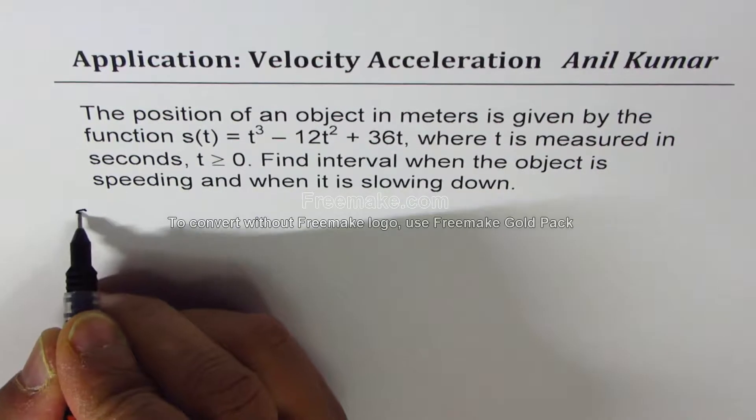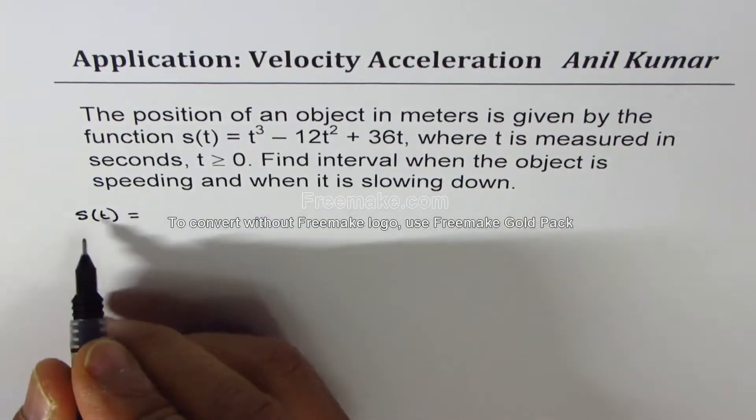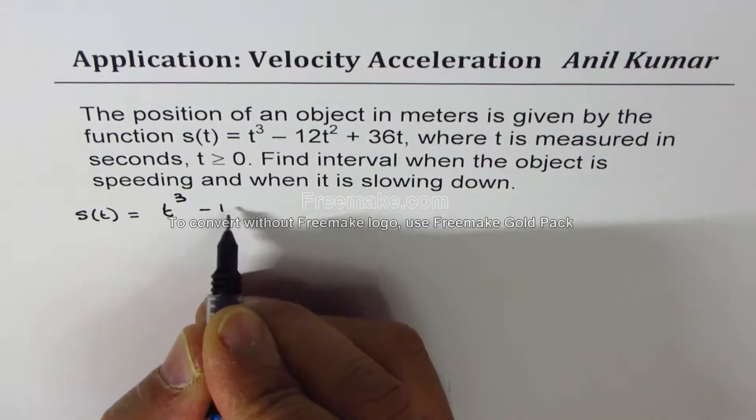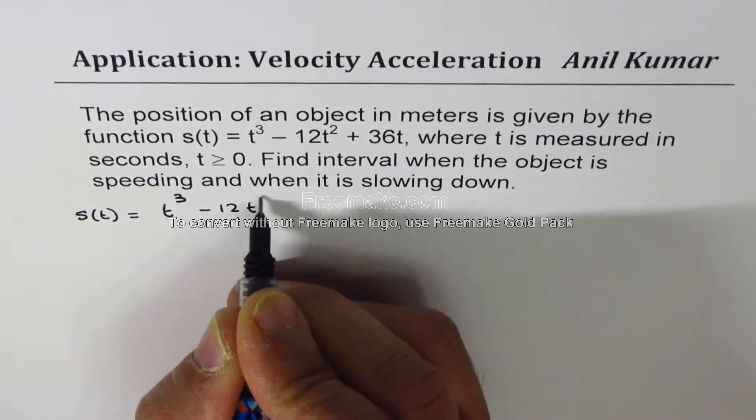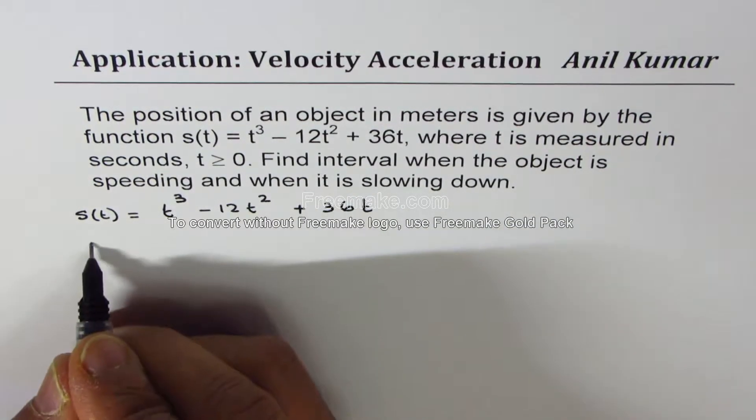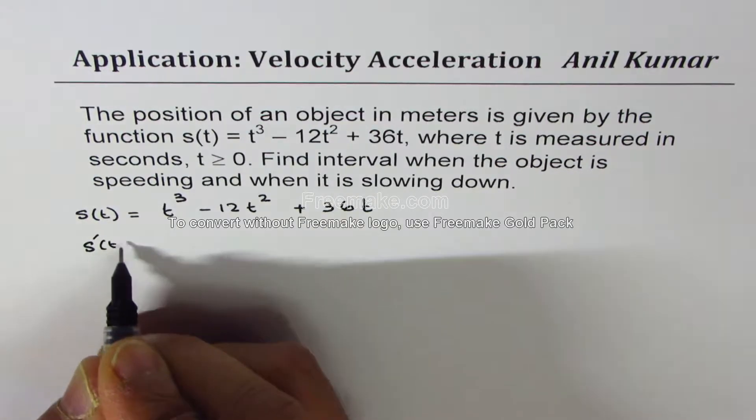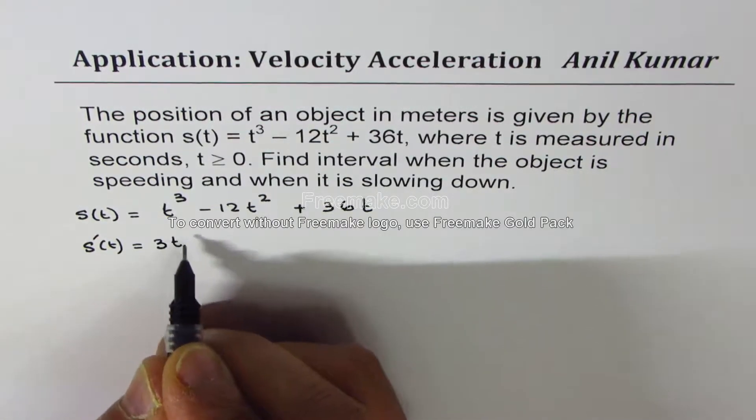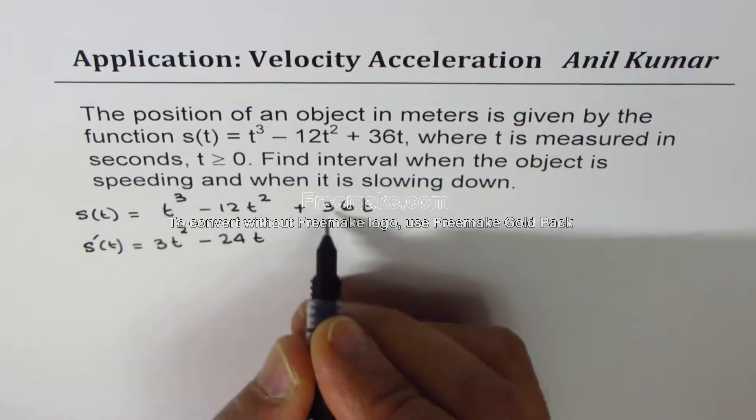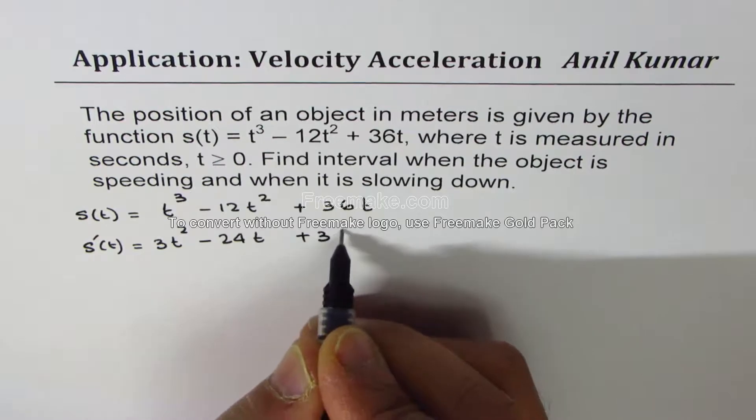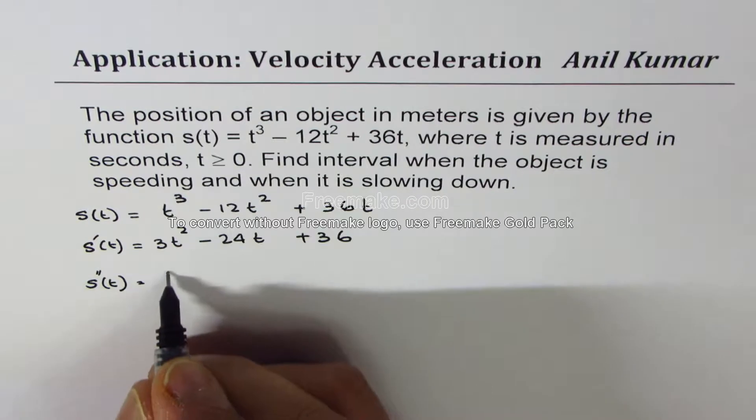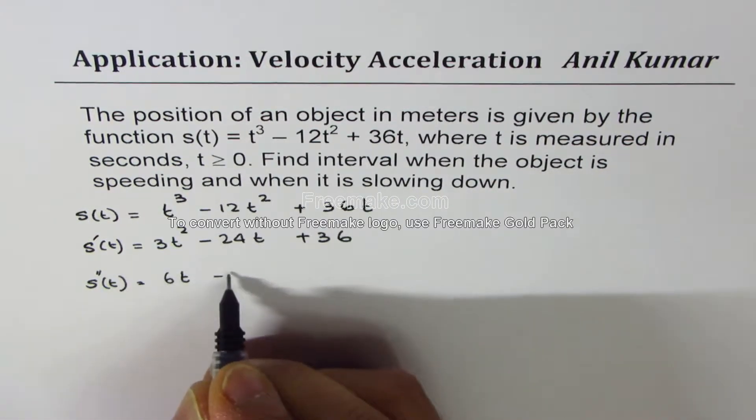So let's begin with the function given to us: position vector s(t) = t³ - 12t² + 36t. Let's find its first derivative and the second derivative. First derivative is 3t² - 24t + 36. And the second derivative is 6t - 24.